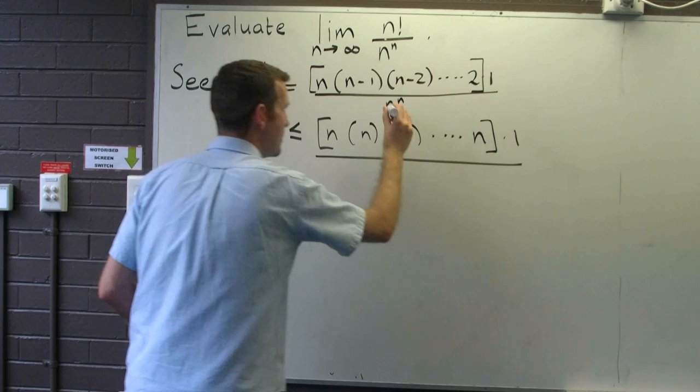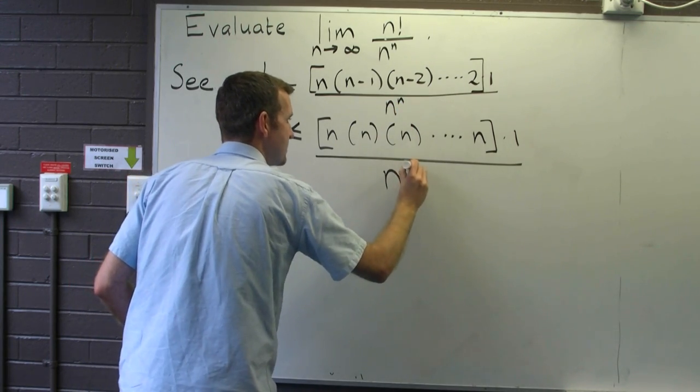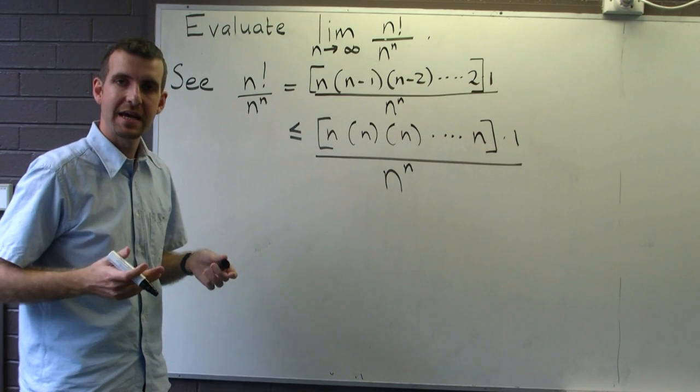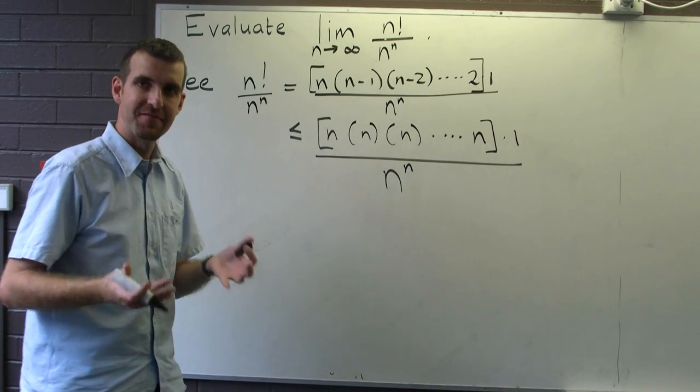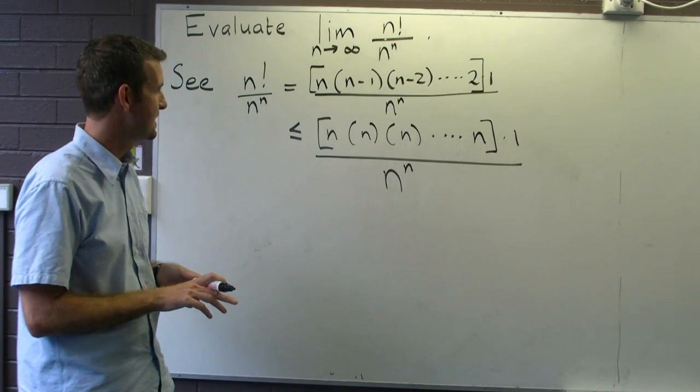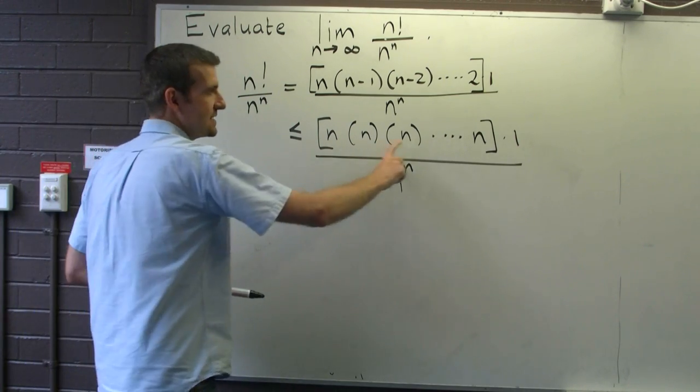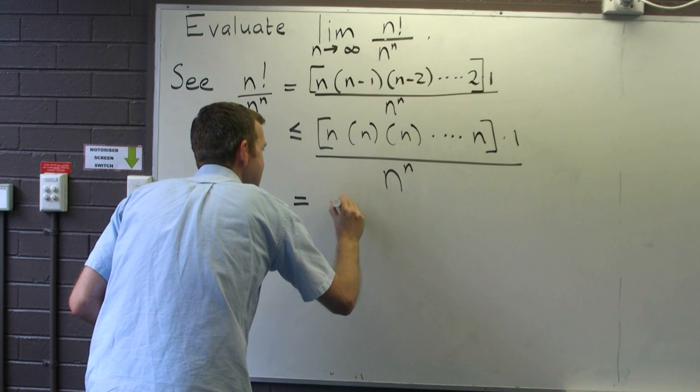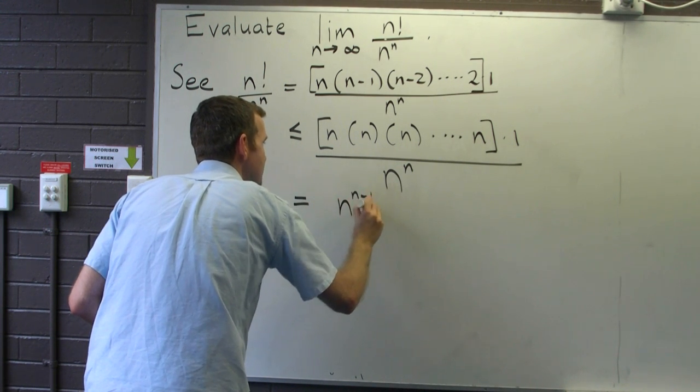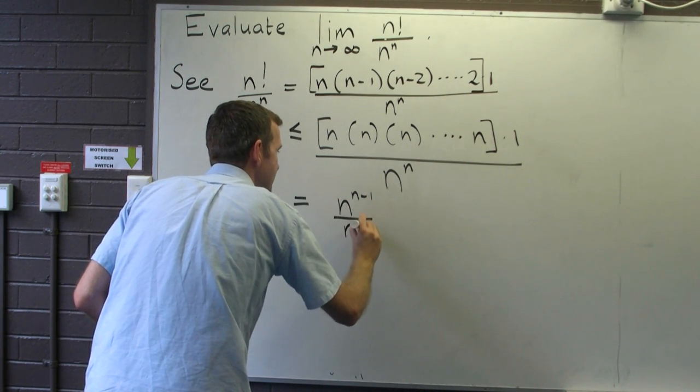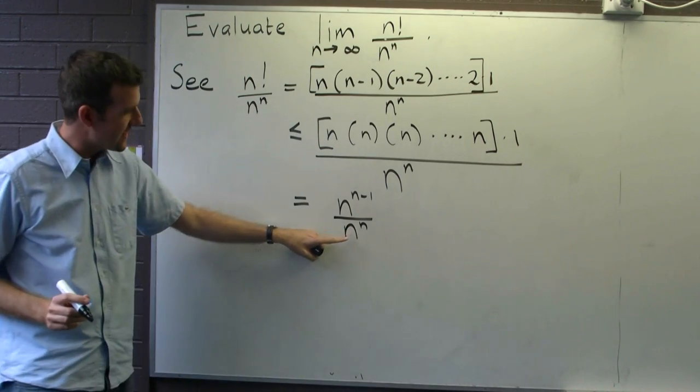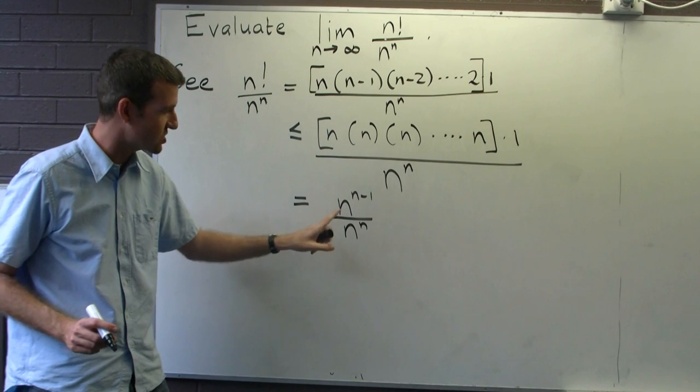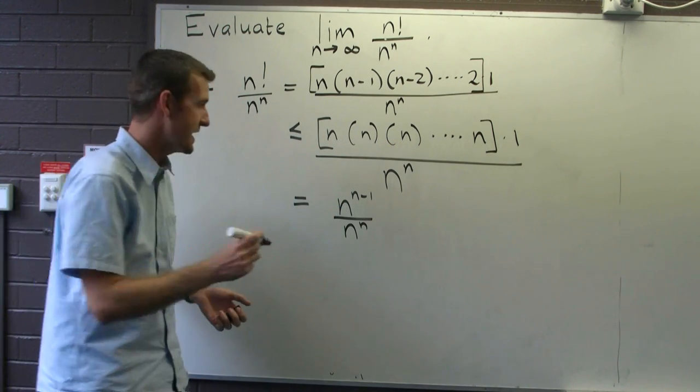Okay, I'm going to keep my n to the n down the bottom. So in this big bracket, I've got n minus 1 factors of n. So I can rewrite this bracket now as n to the n minus 1. And I'm still dividing by that n to the n. Now, can you see the simplification that can occur? This is just 1 over n.